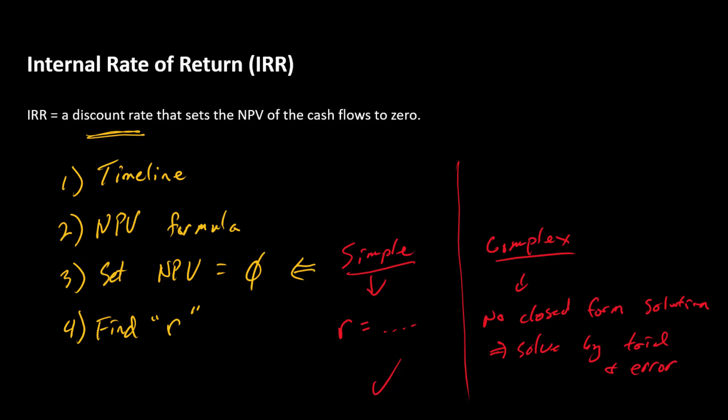And of course, you could put in a bunch of different numbers until you get an NPV equals zero, or you could allow Microsoft Excel or your calculator to do that. But when your calculator or Excel solves for IRR, this is essentially what it's doing: solving by trial and error.